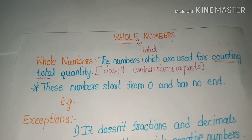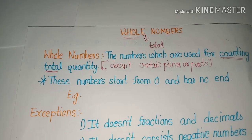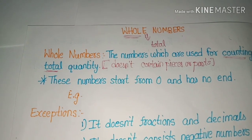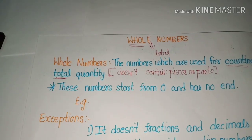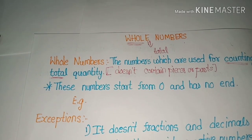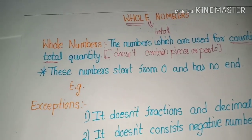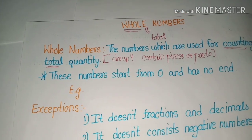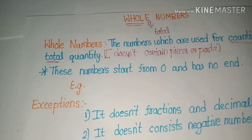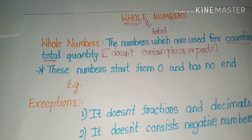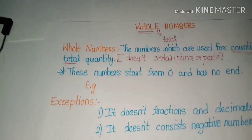Let's get started with the name. What does the name 'whole number' mean? For example, if a teacher comes into your class and asks 'What is the whole strength of this class or school?' — that means what is the total strength. So the word 'whole' means total.